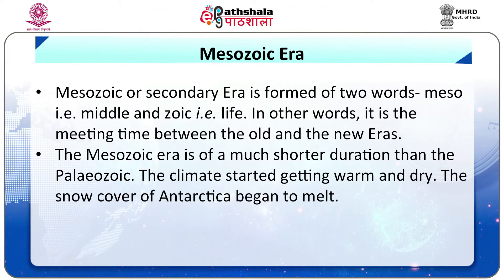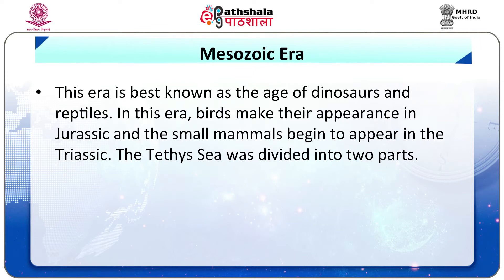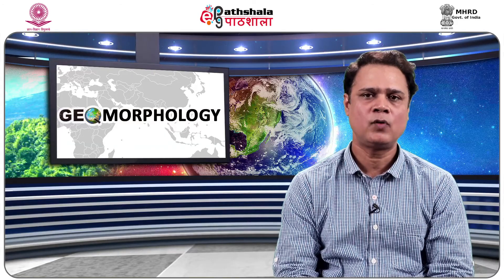After discussing the Paleozoic era, we shall now understand the Mesozoic era. Mesozoic or secondary era is formed of two words: meso, meaning middle, and zoic, meaning life. In other words, it is the meeting time between the old and the new eras. The Mesozoic era is of a much shorter duration than the Paleozoic. The climate started getting warm and dry. The snow cover of Antarctica began to melt, and this era is best known as the age of dinosaurs and reptiles. In this era, birds make their appearance in the Jurassic and small mammals begin to appear in the Triassic. The Tethys sea was divided into two parts. This era consists of three periods: Triassic, Jurassic and Cretaceous.